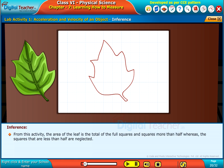From this activity, the area of the leaf is the total of the full squares and squares more than half, whereas the squares that are less than half are neglected.